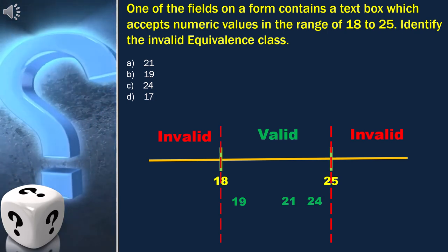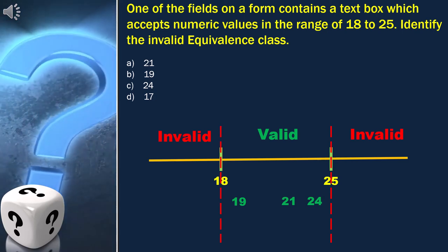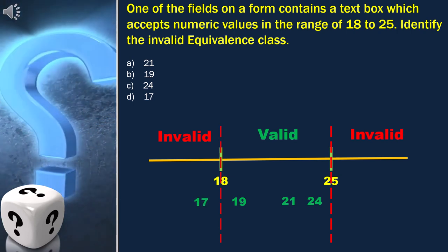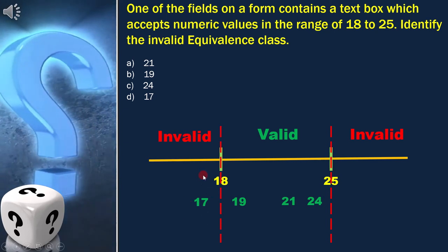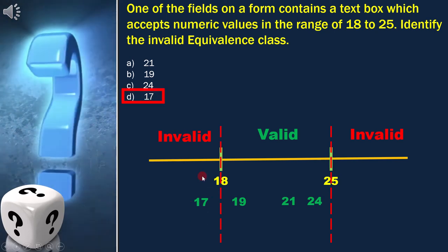Last option is 17, and we can place it here, and it is an invalid value. So, option 4, which is 17, is the correct answer.